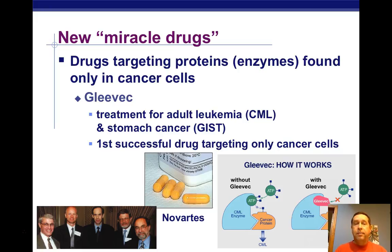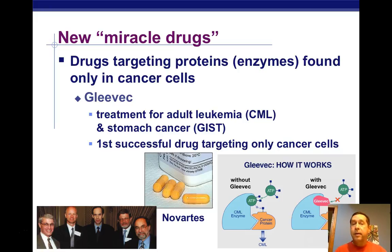Some new drugs have been developed recently, like Gleevec, for treating certain types of cancer such as adult leukemias and stomach cancers. It was the first successful drug that targets only the cancer cells, so it doesn't have the side effects that other cancer treatments have. Certain chemotherapies and treatments are better suited for different types of cancer.